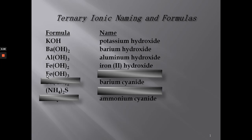For Fe(OH)₃, we have one hydroxide being negative one, and since we have three, that gives minus three. In order for this to cancel, the iron must be iron(III) hydroxide.